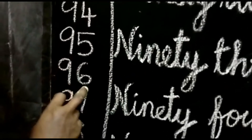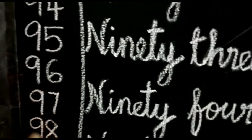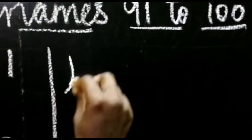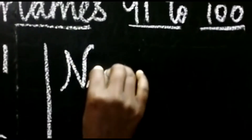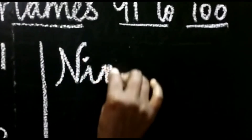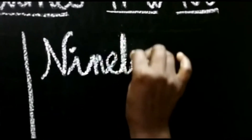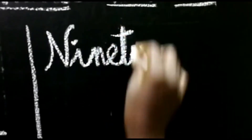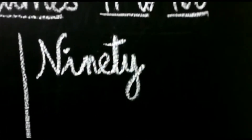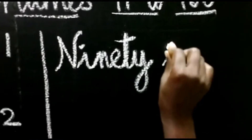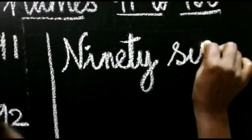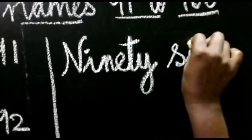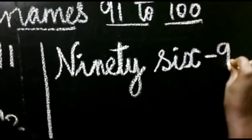95, 96. What is the spelling for 90? N-I-N-E-T-Y. Then S-I-X. So 6, 96.